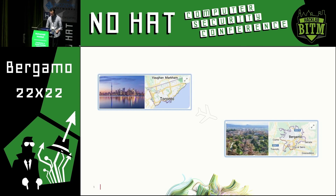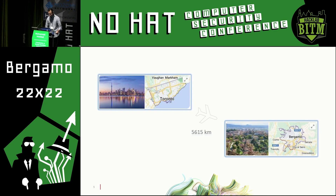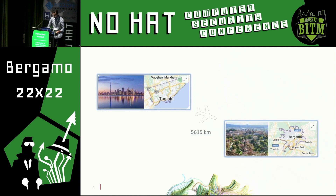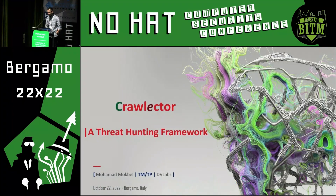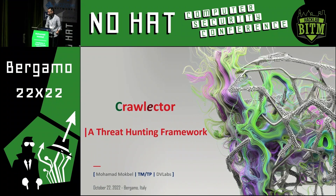Canada is a beautiful country and Toronto itself I consider to be the center of the world. I'm biased, and it took me around just on average 5,615 kilometers to get here. So that's quite the journey. But today we're not talking about geography, Toronto or Bergamo. I'm here to present Crowlector, which is a threat hunting framework.